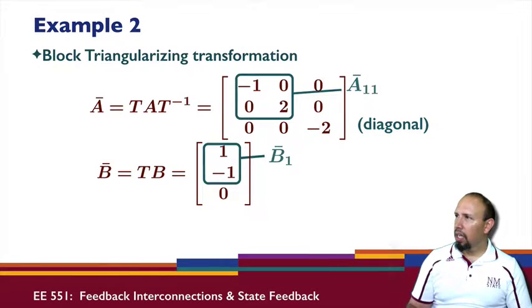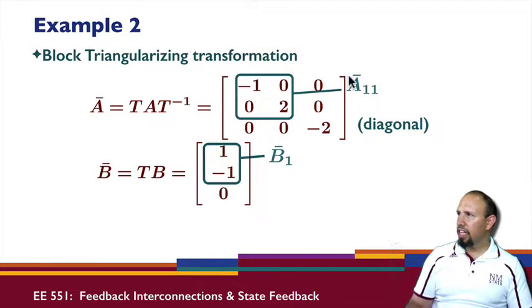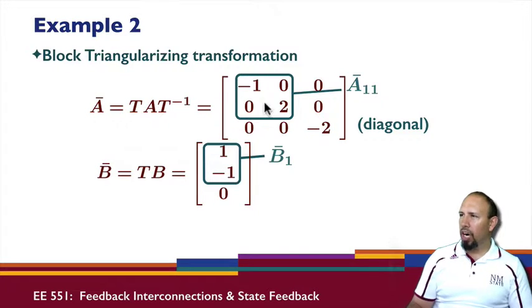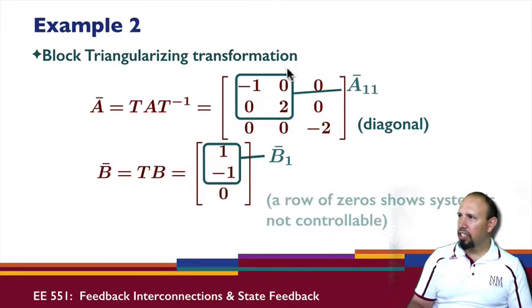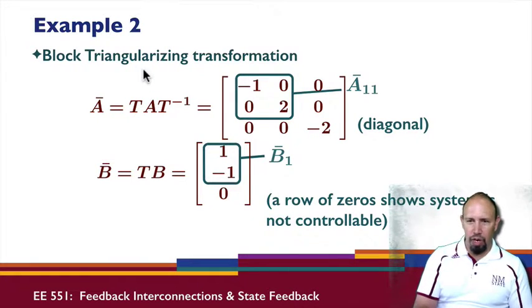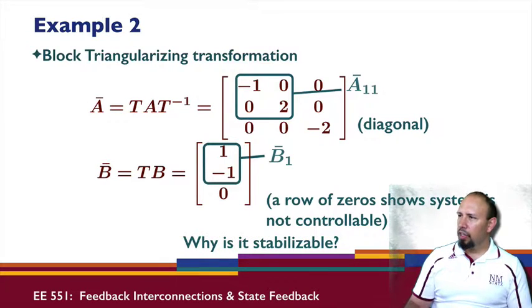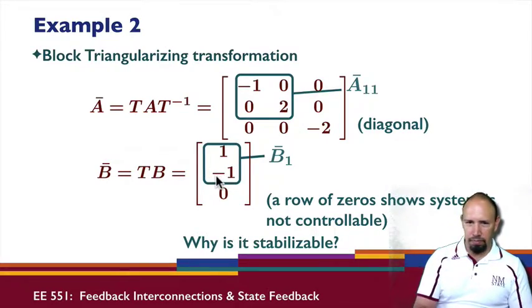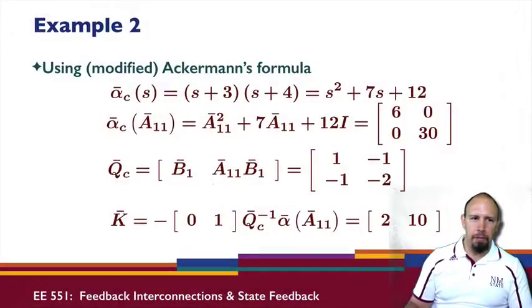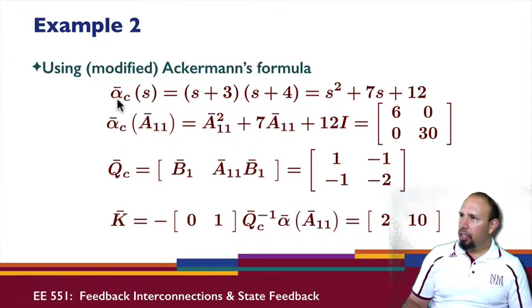If we look at the other part of the system, this is diagonal. These are not zeros. This A11 bar and B1 bar are controllable. That pair is controllable, whereas our system is not controllable. So the system is stabilizable because our unstable eigenvalue is controllable. Now I'm going to define alpha bar c, which is these two poles.